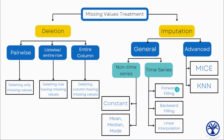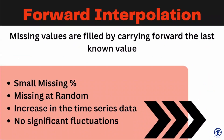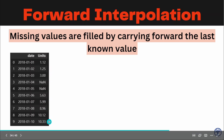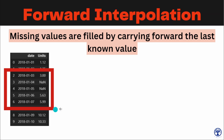The first approach is known as forward interpolation. In forward interpolation, missing values are filled by the last known value. This is best when the percentage of missing values is small, missing values appear at random intervals, and the values are increasing in your time series data with no significant fluctuation. For example, with data like 1.12, 1.25, 3, and so on up to 10.33, we can use forward interpolation to impute the null values.